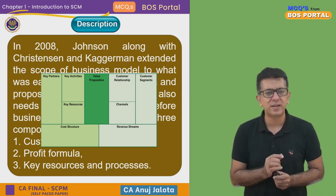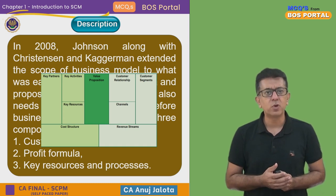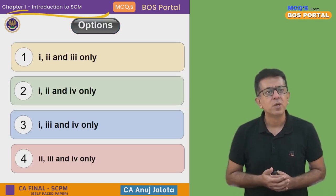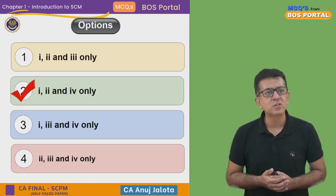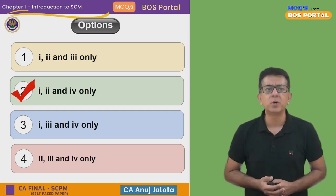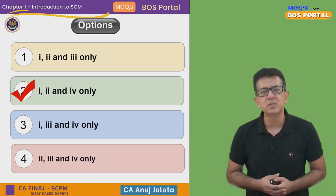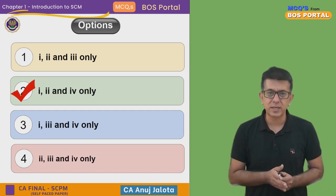Since impact factor was the third option, the correct answer should include one, two, and four — which corresponds to option number two. So option number two is the correct answer. I'll see you all next time.